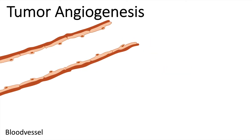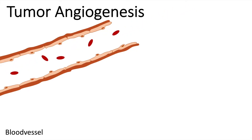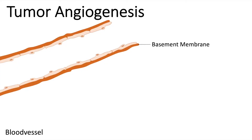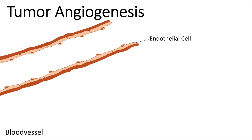Here we have a pre-existing blood vessel. One of several characteristics of a blood vessel is that, due to the hemoglobin in the blood, it is possible to transport and supply cells with oxygen. This blood vessel has a basement membrane on the outside, and on the inside it is protected by elongated endothelial cells.